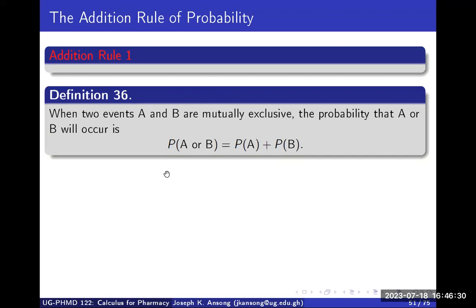We'll apply these ideas later to solve some examples. Here's a definition: when two events A and B are mutually exclusive, the probability that A or B will occur is the probability of A plus the probability of B. So if you want this event or that event, the probability will be a sum.